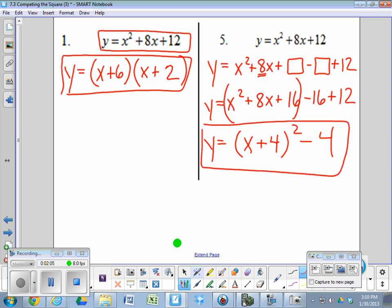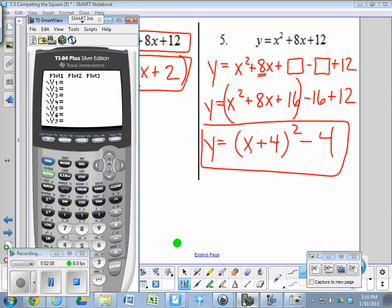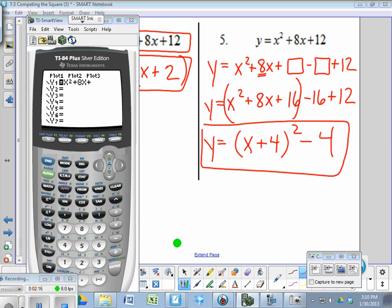And the first thing I want to do is check to see that I get the same parabola when I put it into my calculator in factored form. So go ahead to your calculator and go to y1, put that in. For y2, put the factored form in. And then for y3, put the vertex form in, x plus 4 squared minus 4.